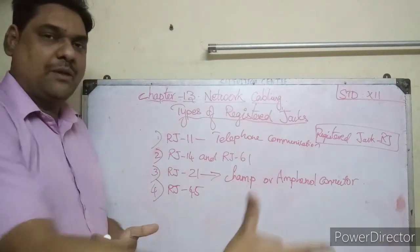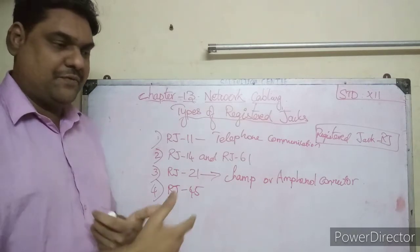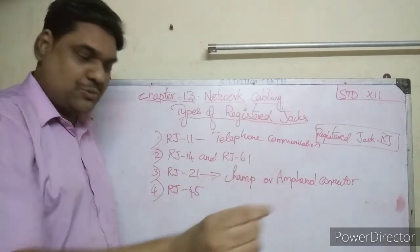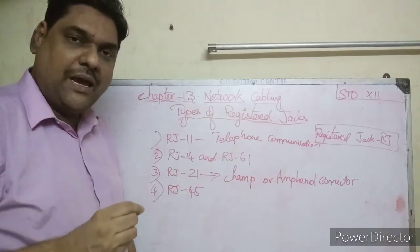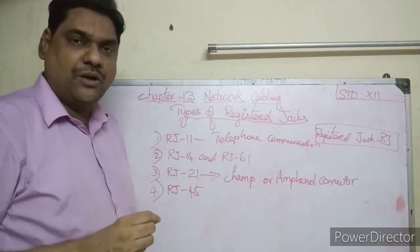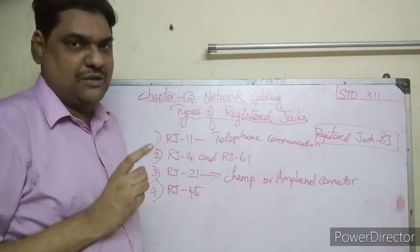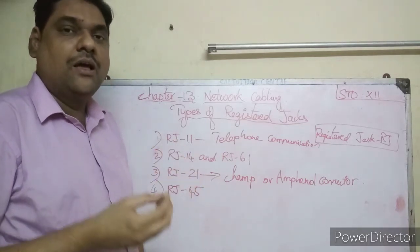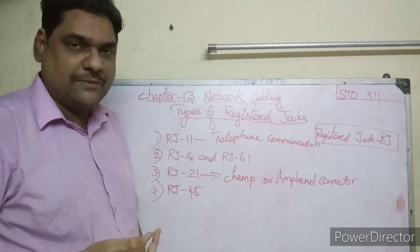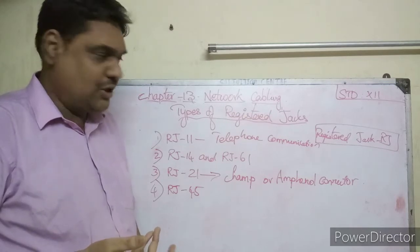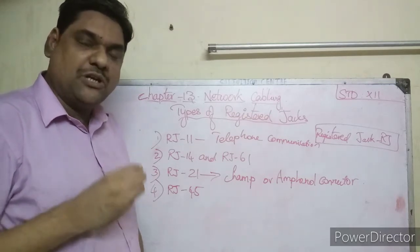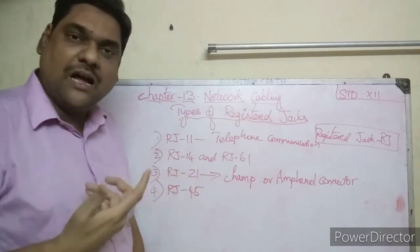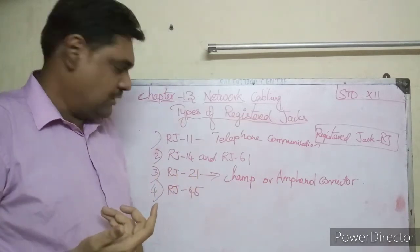With RJ-21 you can communicate with 25 other devices because it has 25 individual pin pairs. It uses a special connector called the Champ connector. The Champ connector is the final connector used for RJ-21, and it is an important component to remember.